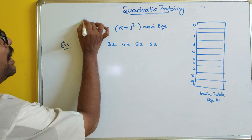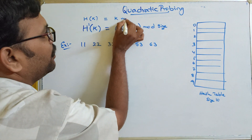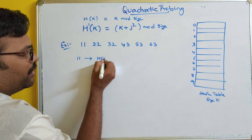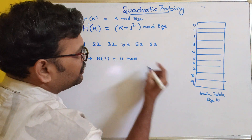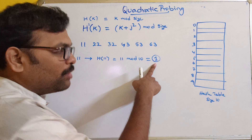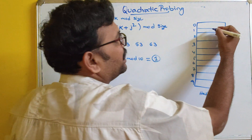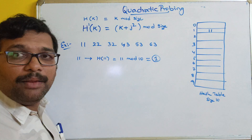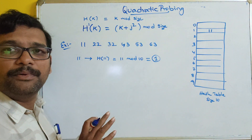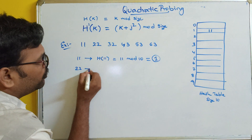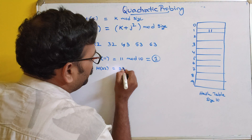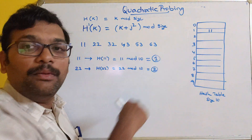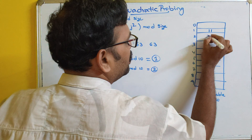For 11: h(11) = 11 mod 10 = 1. Index 1 is available, so we store 11 there — no collision. For 22: h(22) = 22 mod 10 = 2. Index 2 is available, so there is no collision and we directly store 22 at location 2.